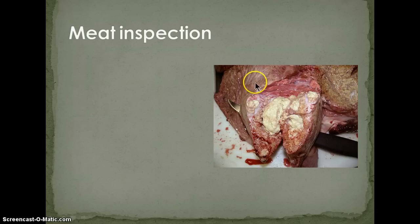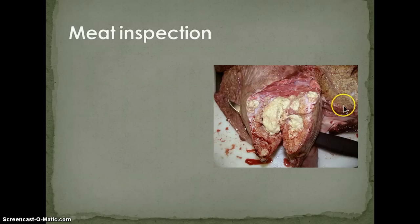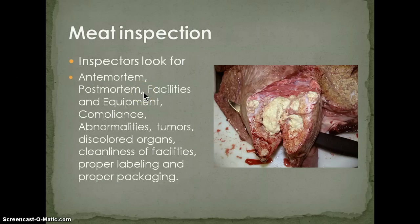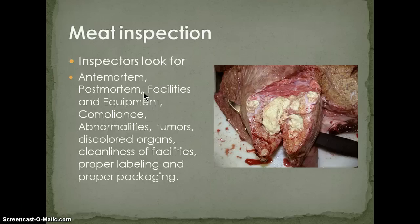Inspectors look for anything out of the norm, such as infections — for example, a small laceration in the lower lobe of a lung that became inflamed. They perform antemortem inspection, observing animals prior to slaughter to confirm they can walk in on their own and appear well. They also perform postmortem inspection, examining how the skin was removed, checking facilities and equipment, and ensuring everything complies with USDA regulations. Anything that looks abnormal can cause them to tag the animal before distribution.